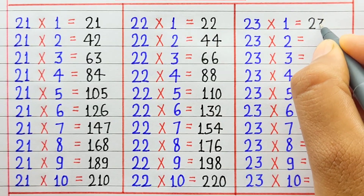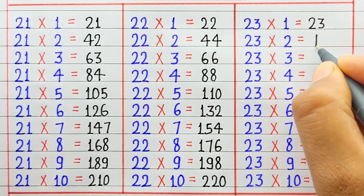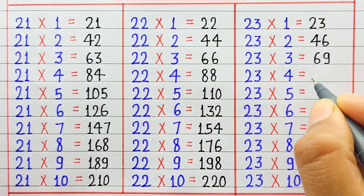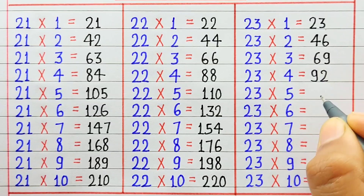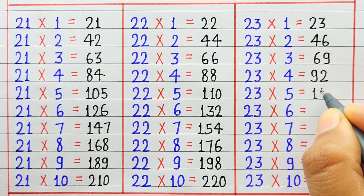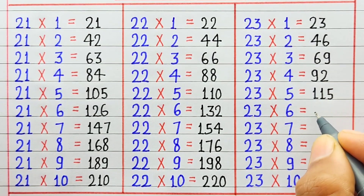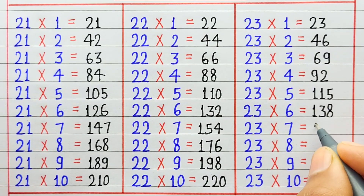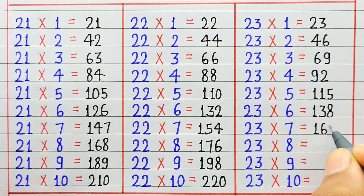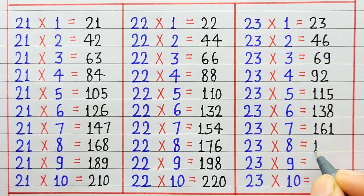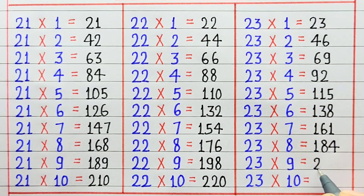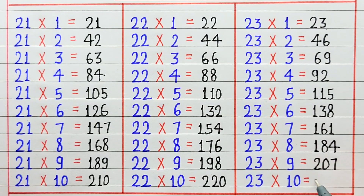23 1 ja 23. 23 2 ja 46. 23 3 ja 169. 23 4 ja 92. 23 5 ja 115. 23 6 ja 138. 23 7 ja 161. 23 8 ja 118. 23 9 ja 207. 23 10 ja 230.